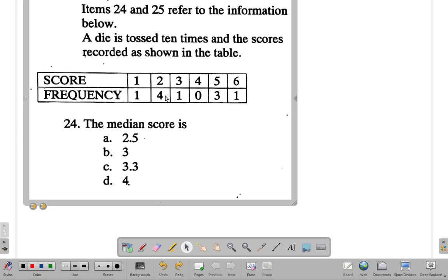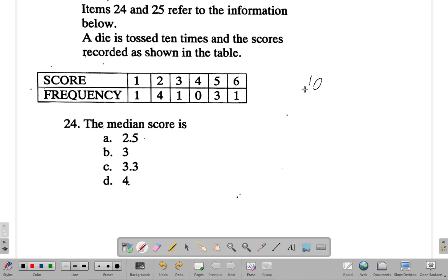Now how many scores are here? Frequency means how frequent you have them. One is there one time, two is there four times, then four and five, then six. There's no four, so it's zero. Three is there six times, and one is there once. There are ten values, ten of them. Now the fifth and sixth one are in the middle.